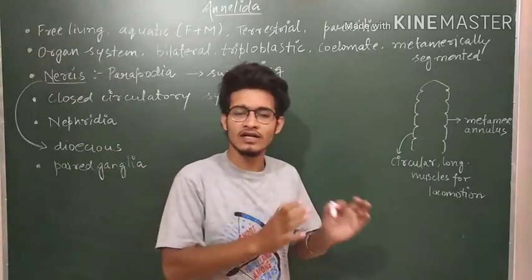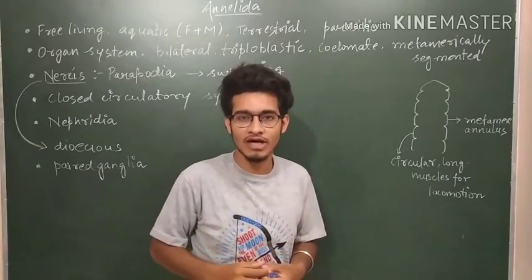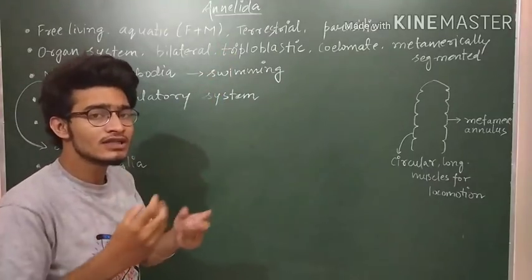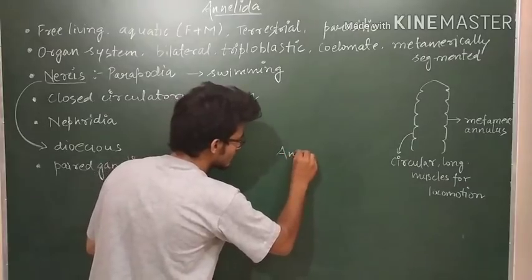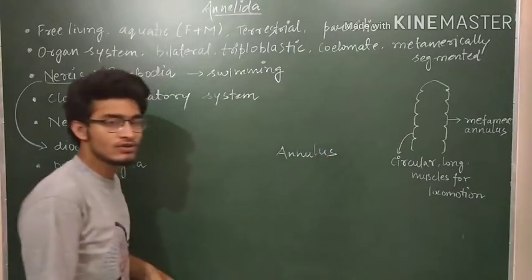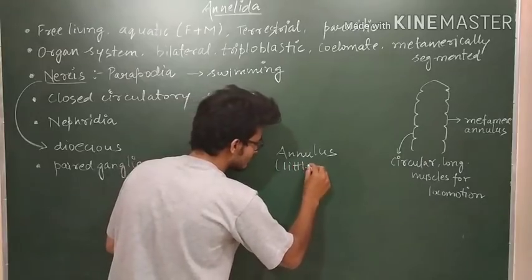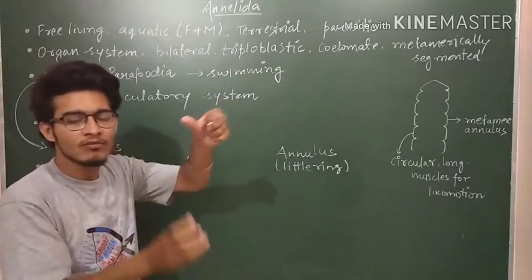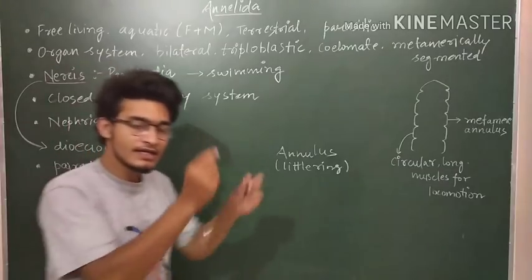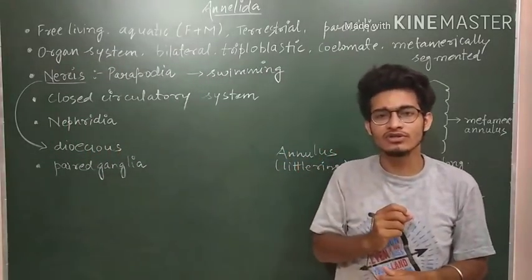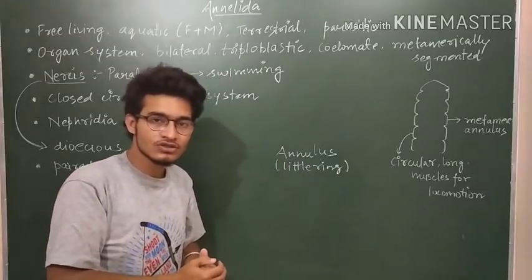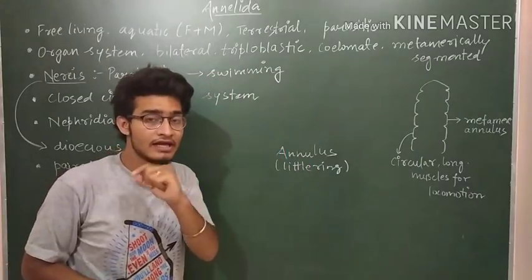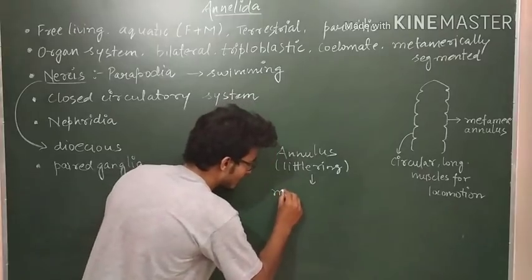Now Annelida, we will talk about the peculiar feature which is hidden in the name itself. The Annelida word is formed from another word that is annulus or annuli. Annulus or annuli simply means little ring. So there are little rings or little segments which are present in the body of an annelid. The most characteristic feature of Annelida is the presence of annulus or little rings and a phenomenon that is metameric segmentation.